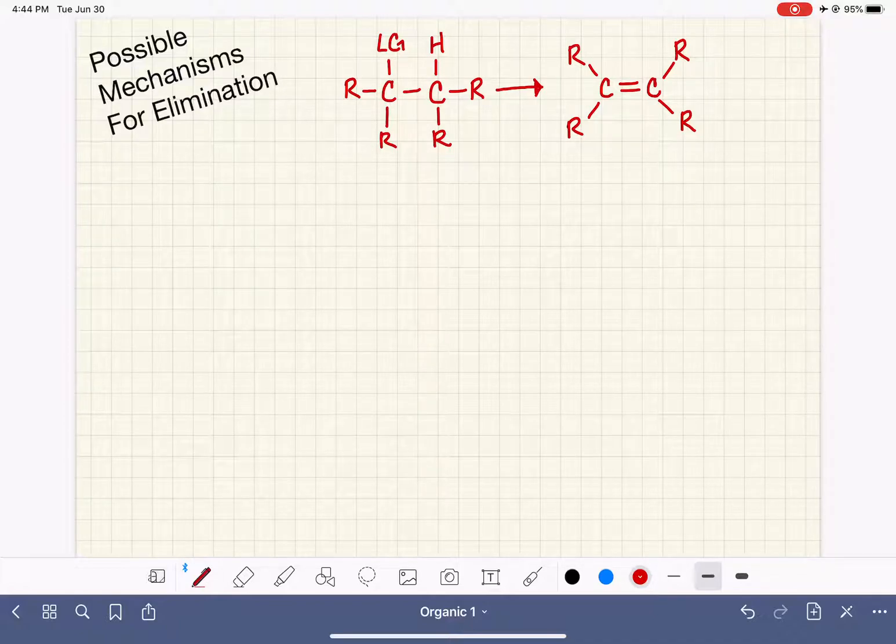So there are two different possible ways in which the elimination reaction can take place. These two possible ways are the same possibilities as what we see for substitution. So one possibility is that we have a two-step mechanism.